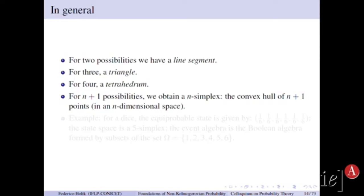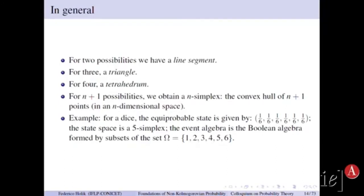So each point of the convex set of states represents a probabilistic state of the system involved. Well, this is a dice. You have six outcomes and so on.